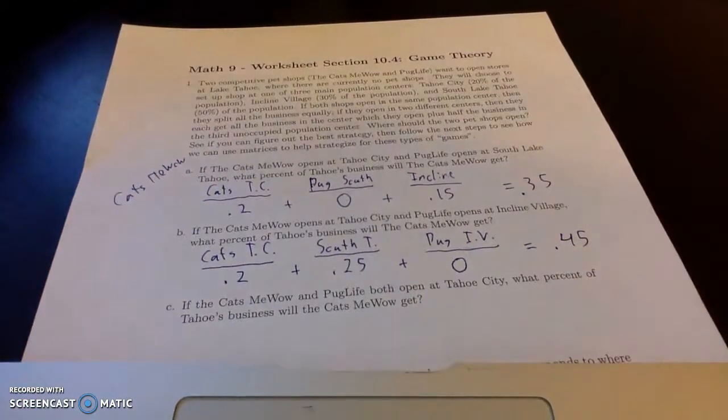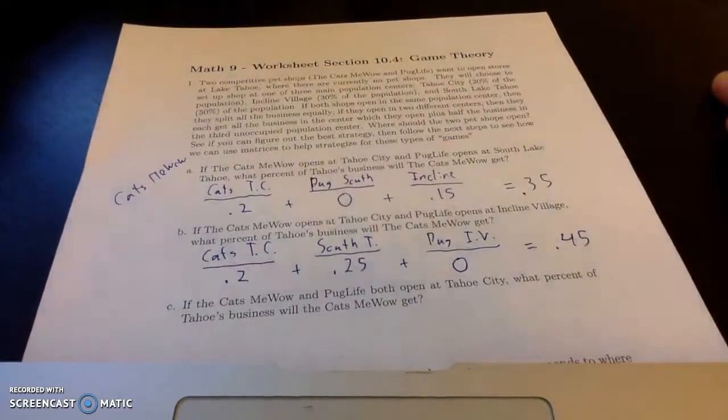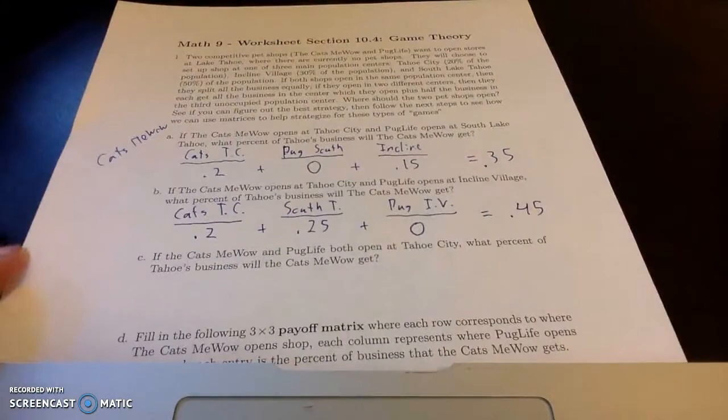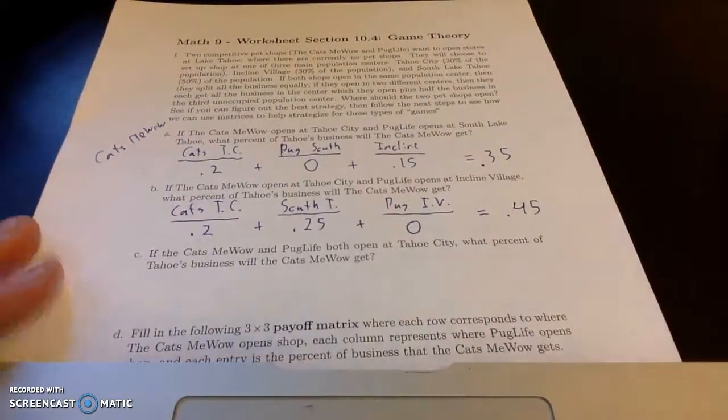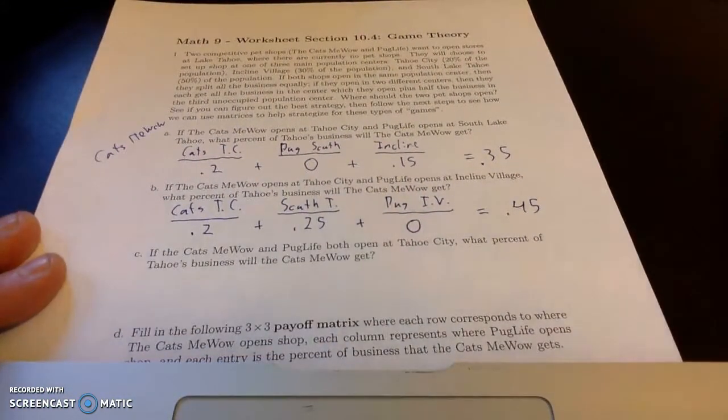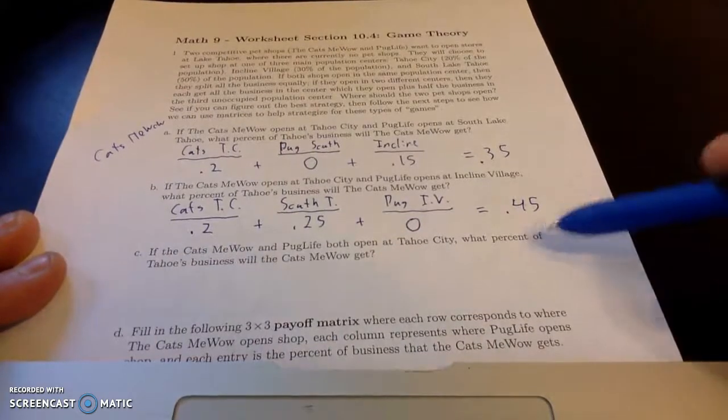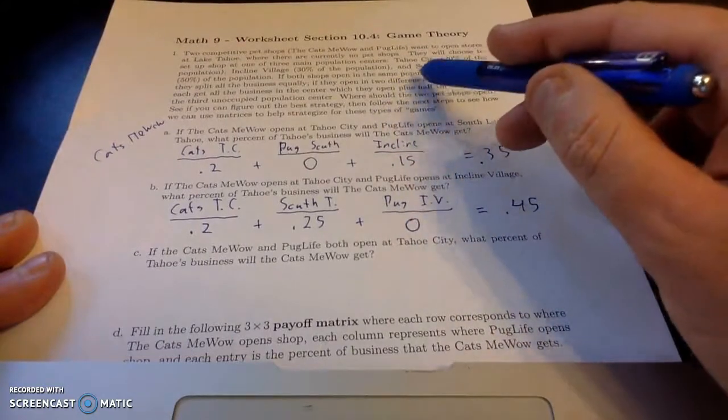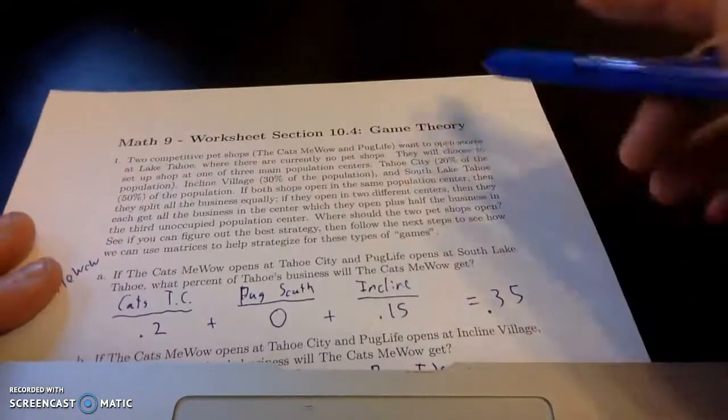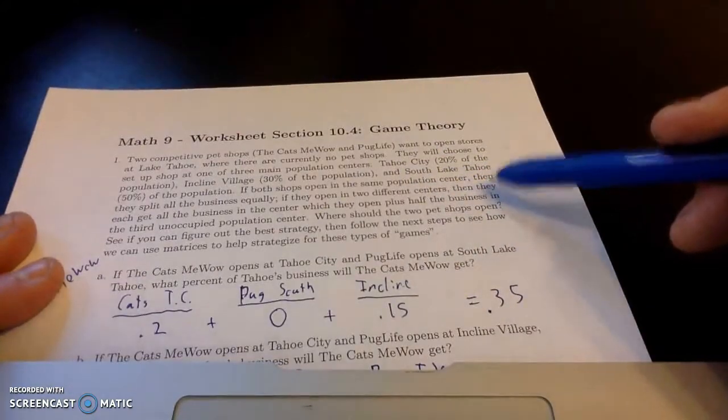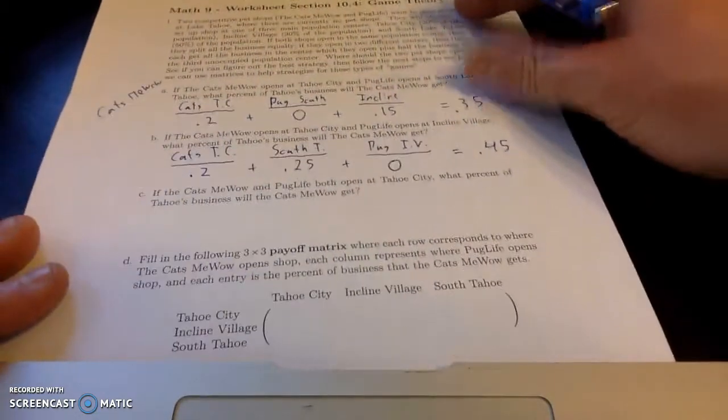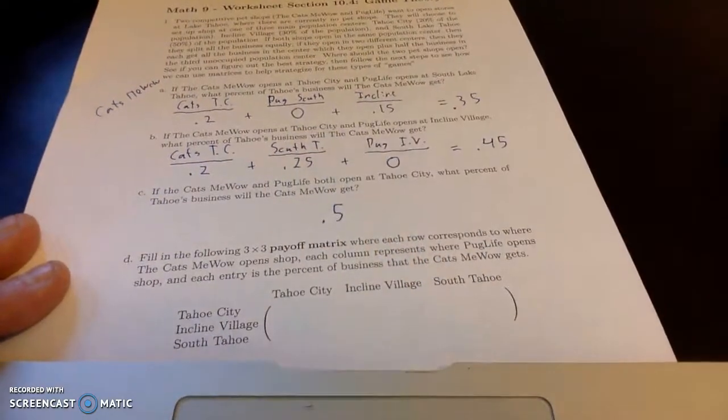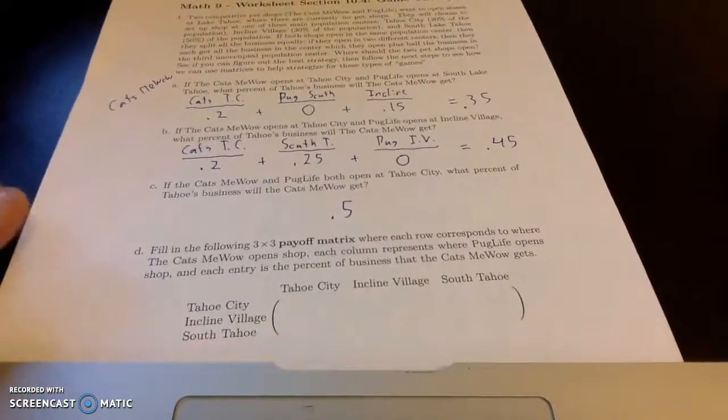Alright. So if we look here, this is looking better for the Cats Meow. And lastly, if Cats Meow and Pug Life both open at Tahoe City, what percent will Tahoe's business get? Sorry, what percent of Tahoe's business will the Cats Meow get? We're looking at it here. If they open at the same population center, then they split all of the business evenly. So we can crunch through these numbers again, but this is going to be 50%.